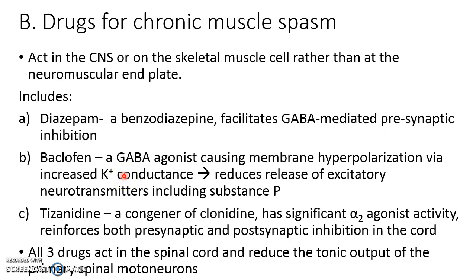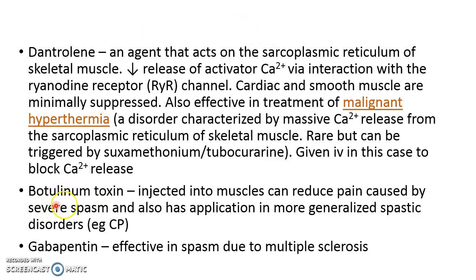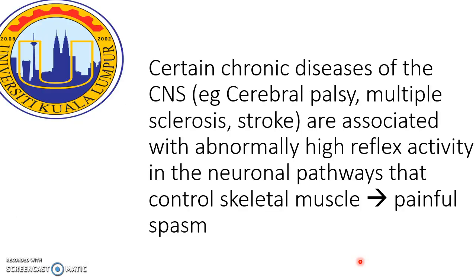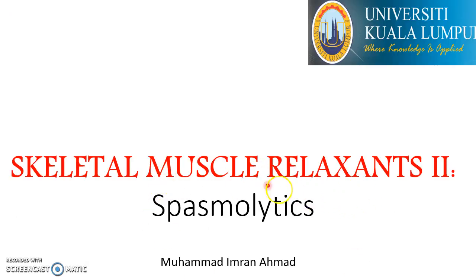Besides that, we can also use botulinum toxin (Botox), which can be injected into muscles to reduce pain caused by severe spasm and can be used in more generalized spastic disorders such as cerebral palsy. Gabapentin is also effective in spasm due to multiple sclerosis. That concludes today's continuation on skeletal muscle relaxants, focusing specifically on spasmolytics.